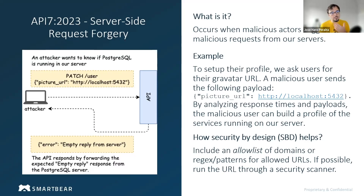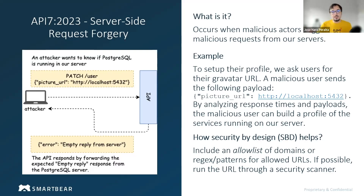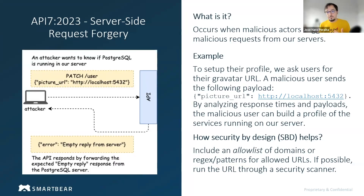The way they will do this is — there are situations in which we have to ask our users for input in the form of URLs so that we can pull content from that URL. Imagine, for example, we have a process to set up user profiles and we ask them to provide a URL for their profile picture — a Gravatar or something like that.